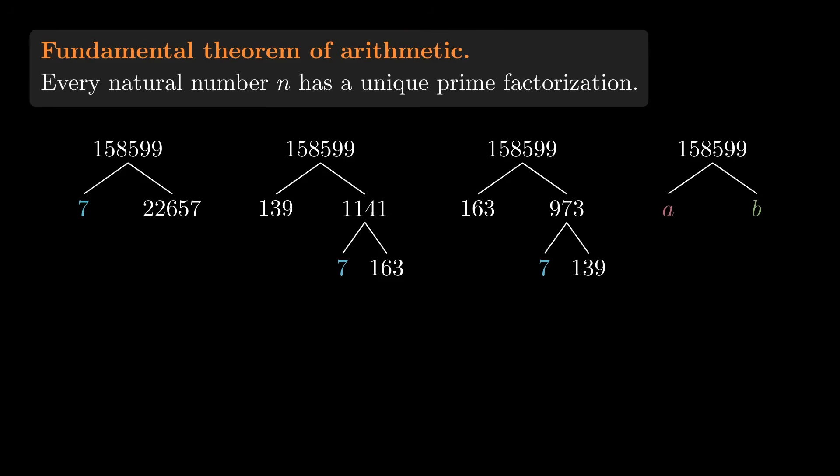Couldn't the contents of 7 somehow get spread out? Maybe a square root of 7 ends up in a, and another square root of 7 ends up in b, and a and b are still integers because each square root of 7 gets multiplied by some other non-integer.